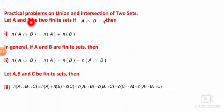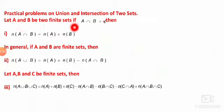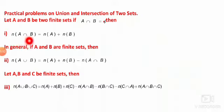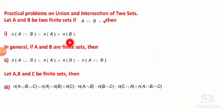Before solving the problems, we are going to study some important formulas. As we know, if A and B are two finite sets and A intersection B is equal to the empty set, then N of A union B is equal to N of A plus N of B. Here N of A indicates the number of elements in set A, and N of B indicates the number of elements in set B.